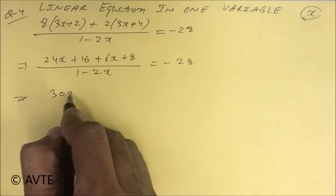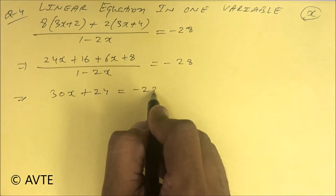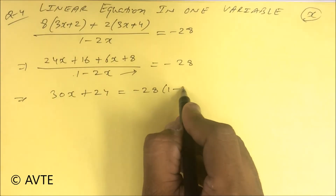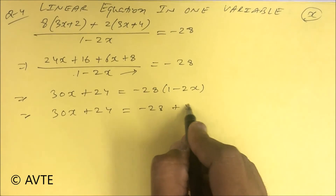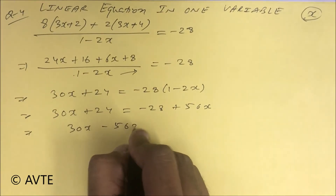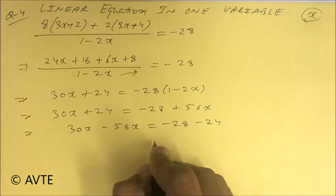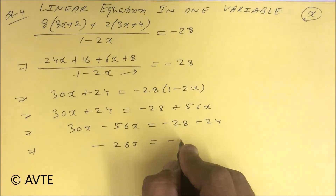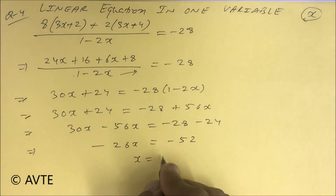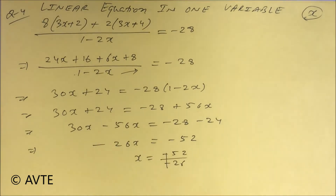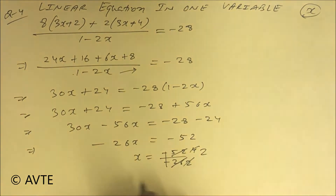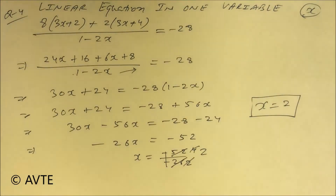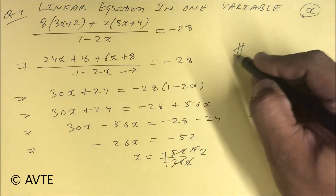Collecting like terms: 30x plus 24 on one side and 1 minus 2x on the other. This gives 30x minus 56x equals minus 28 minus 24, so minus 26x equals minus 52. Therefore x equals minus 52 upon minus 26. Remember the table of 13: 13 twos are 26, so the value of x is 2. This is a simple question examiners often ask. Keep watching our channel AVT.